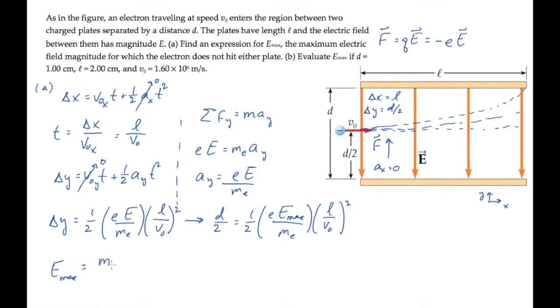That tells us that the maximum electric field is equal to the electron mass times the plate separation d, times the square of the initial speed v0, divided by the magnitude of electron charge, times the square of the plate width.